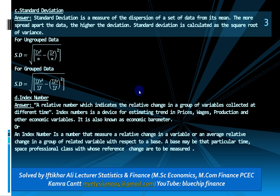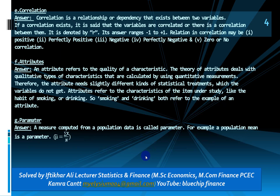Question four: index number. A relative number which indicates the relative change in a group of variables collected at different times. An index number is a device for estimating trend in price, production, and other economic variables. It is also known as an economic barometer — a number that measures relative change in a variable or average relative change in a group of related variables with respect to a base.